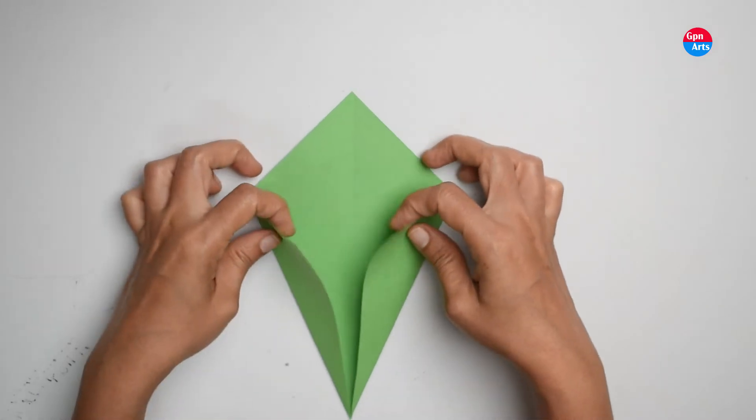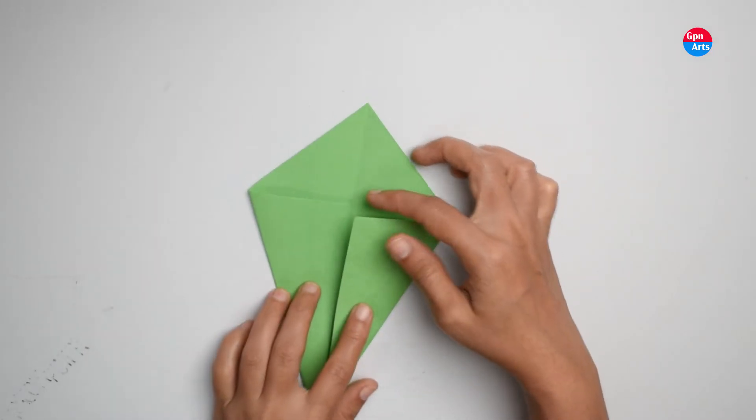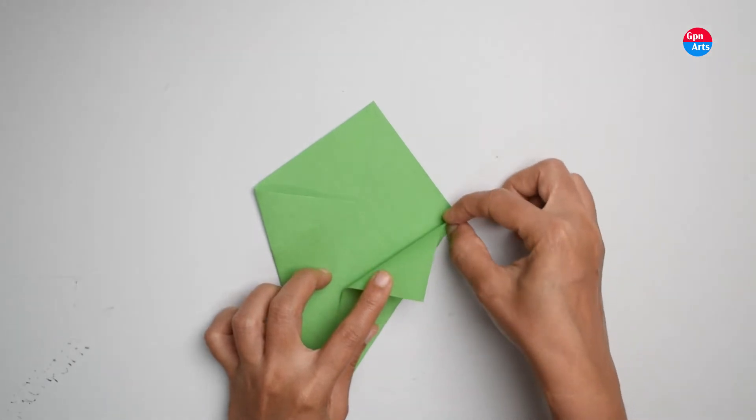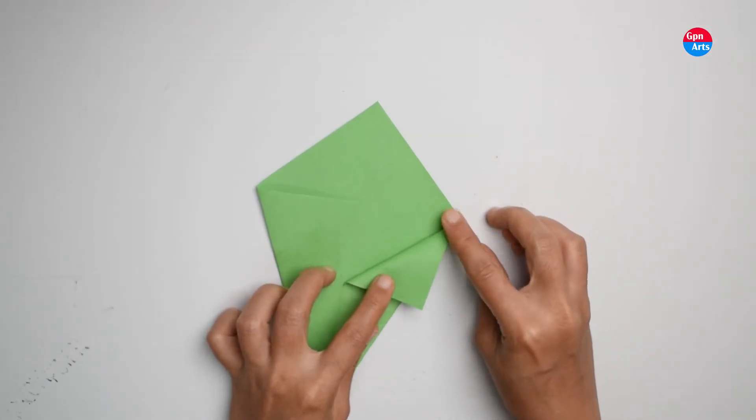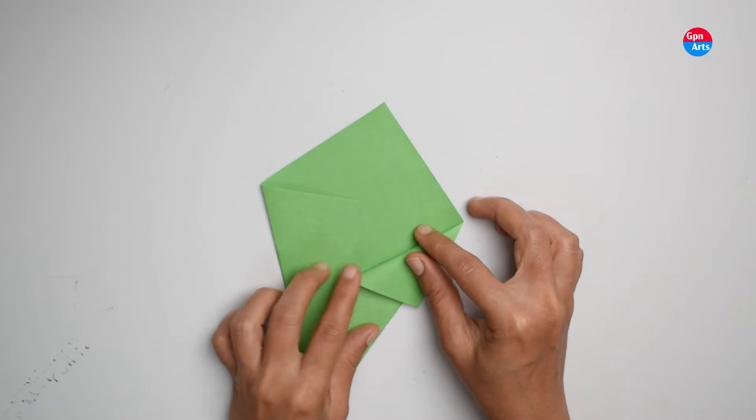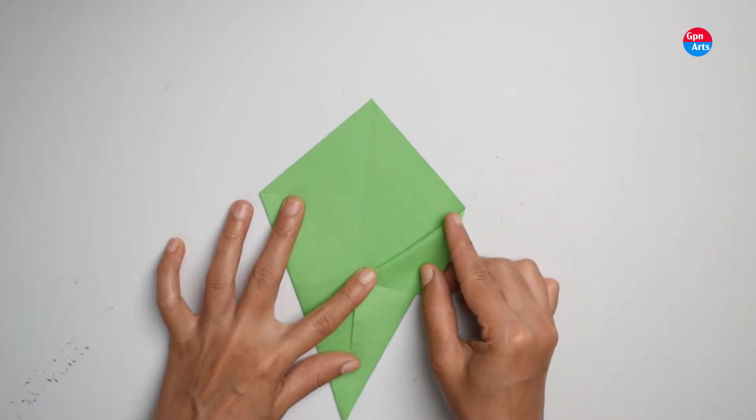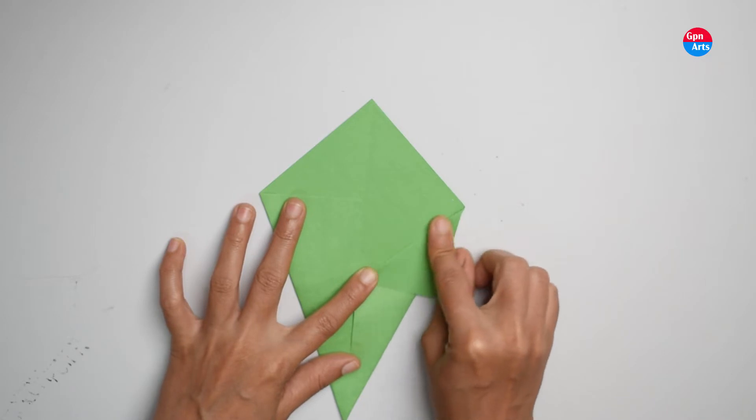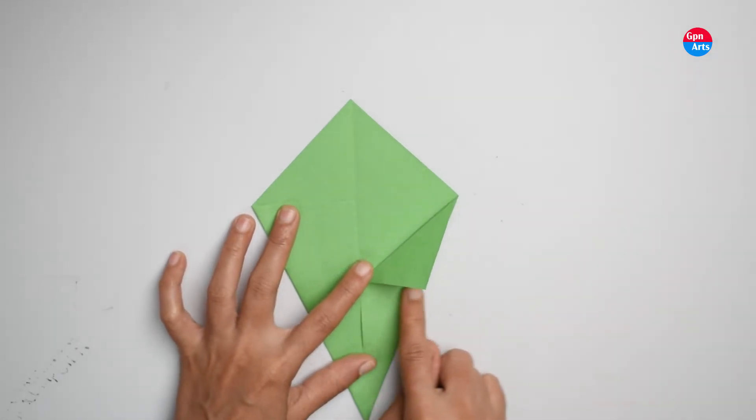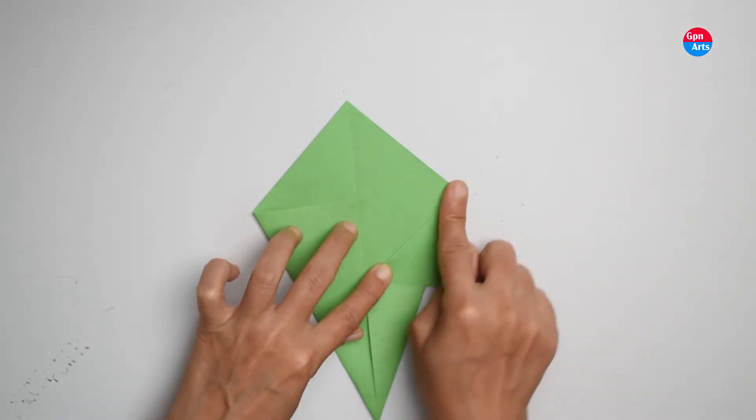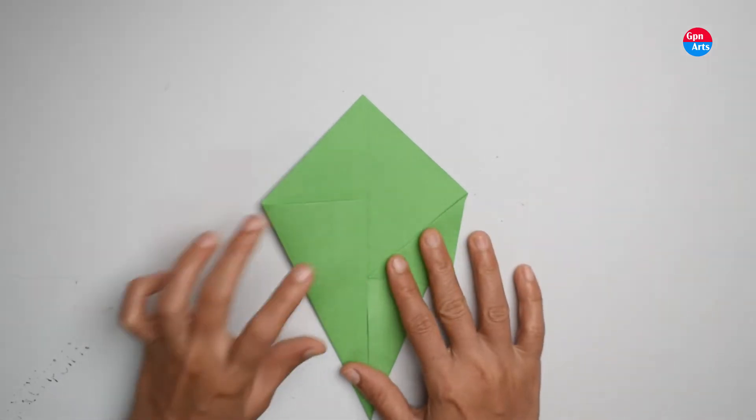Now we have two flaps here. Fold this flap at the back side to get the triangle shape. Same on the other side.